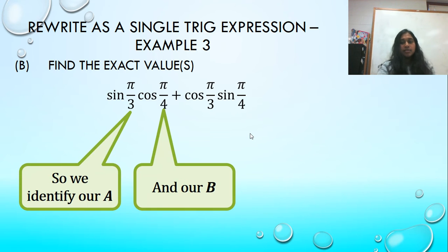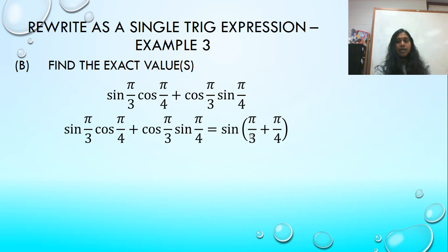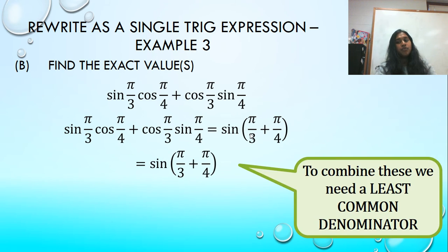There's my alpha. There's my beta. So I recognize that's the sum identity for sine. I can do pi over three plus pi over four.